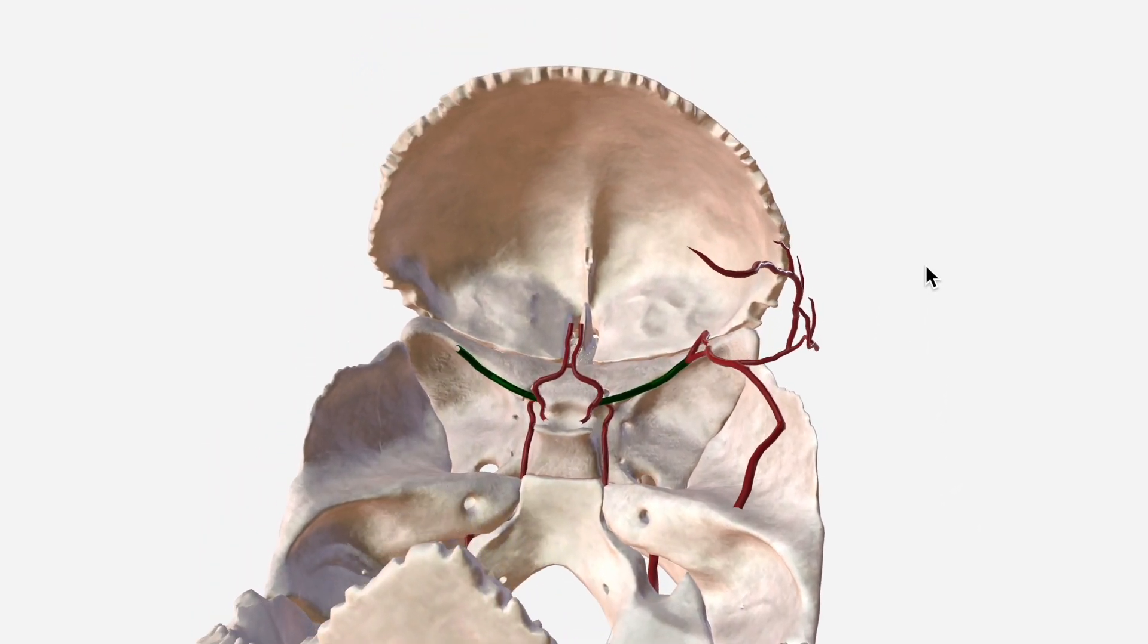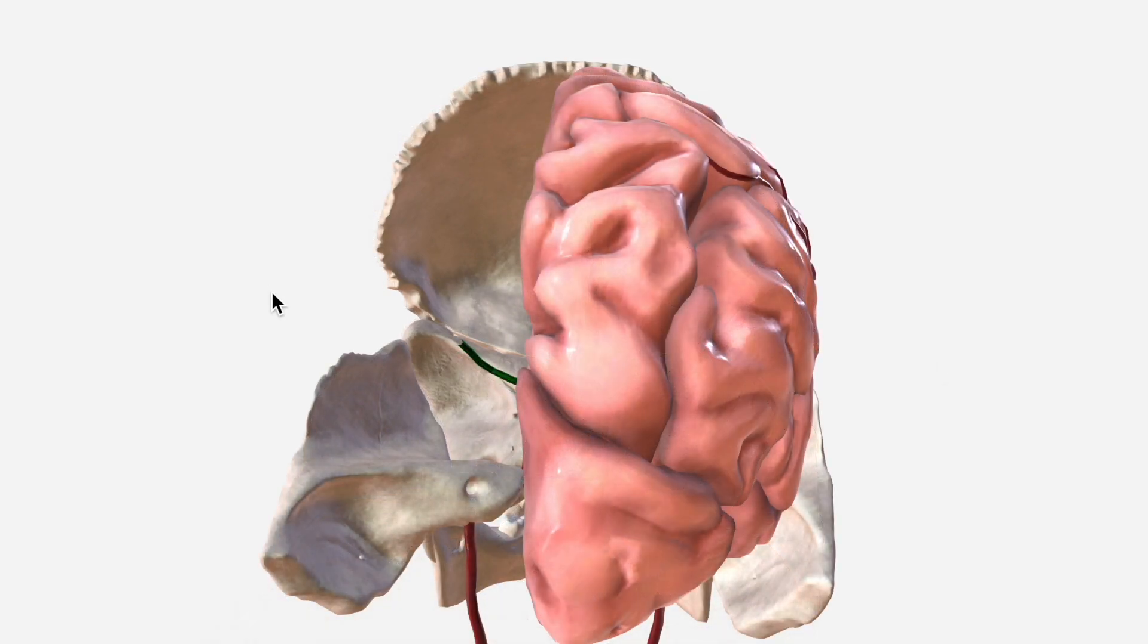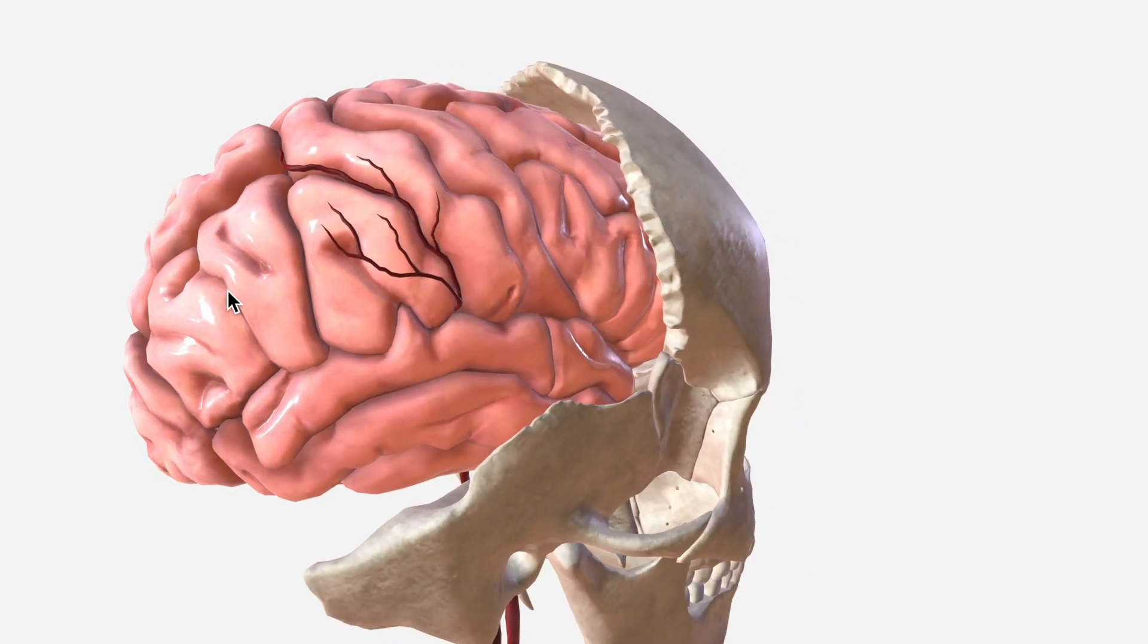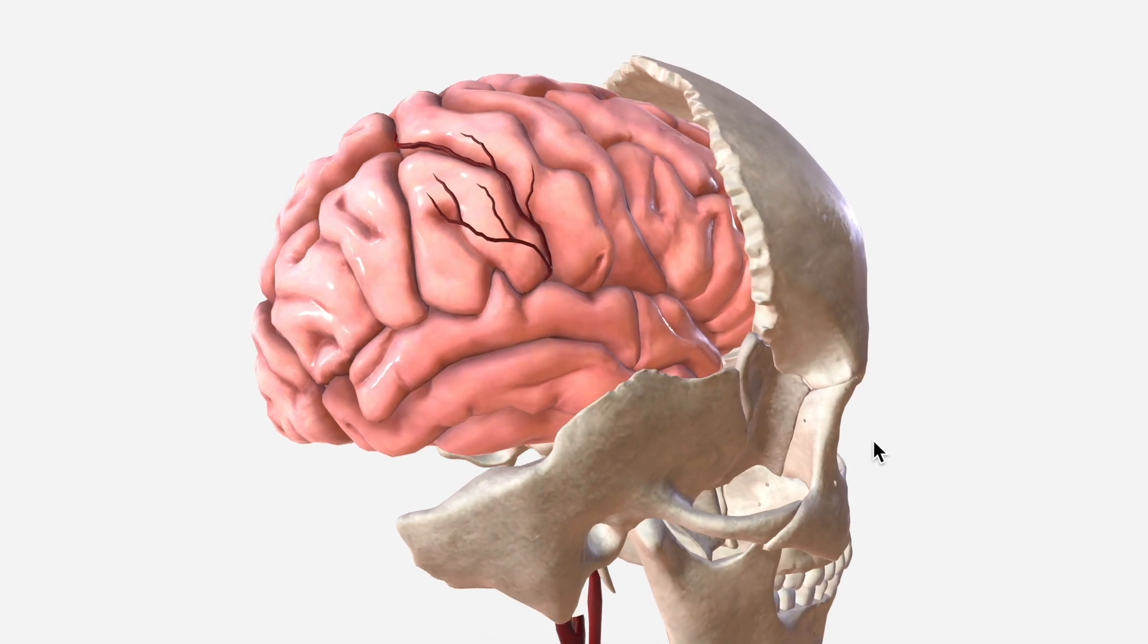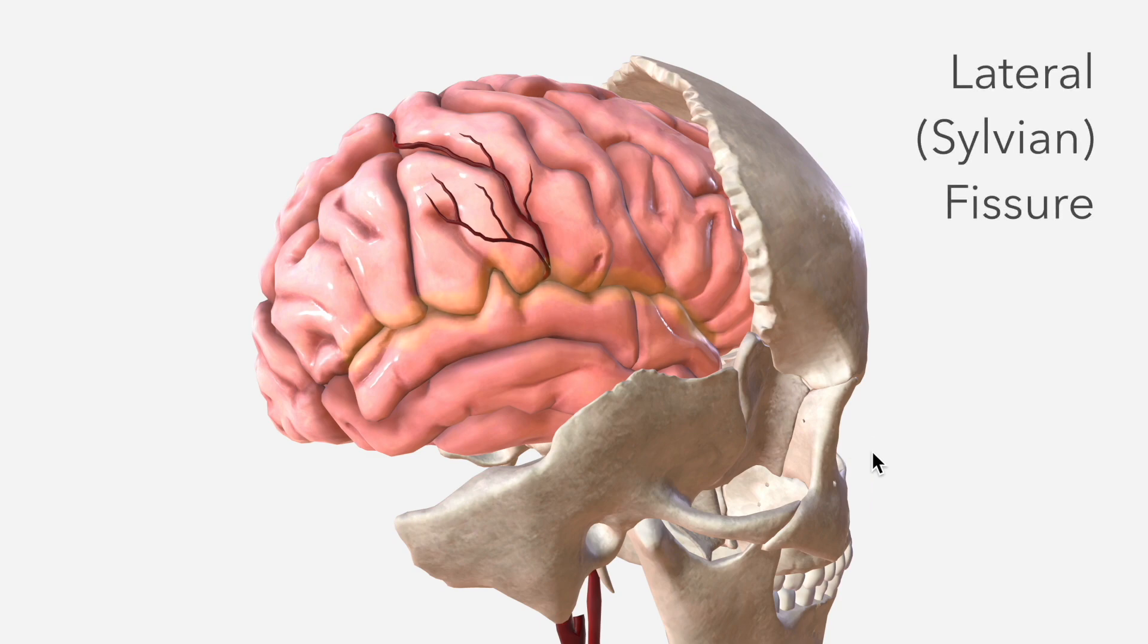If we bring in the right cerebral cortex we can see how that branch is extending over the surface. The inferior and superior terminal branches of the MCA are hidden deep within the cerebral cortex. Specifically they're embedded in the lateral fissure or the sylvian fissure.